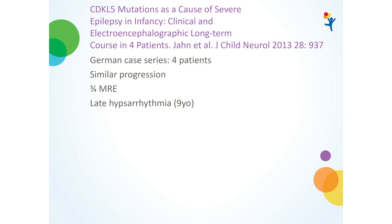There was a German case series — 'CDKL5 Mutations as a Cause of Severe Epilepsy in Infancy: Clinical and Electrographic Long-Term Course in Four Patients.' They noted similar progression, felt that 75% had medically resistant epilepsy, and noted one patient had very late hypsarrhythmia in a nine-year-old, which is quite unusual — normally we think hypsarrhythmia goes away by one to two years of age.